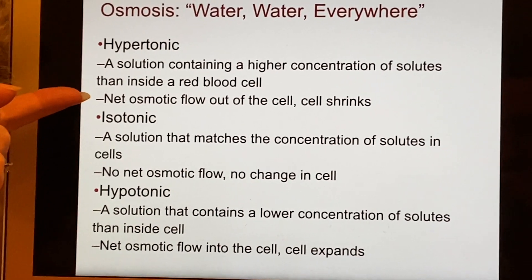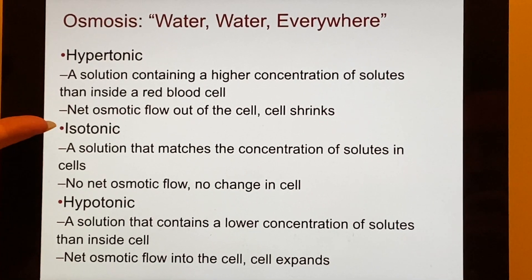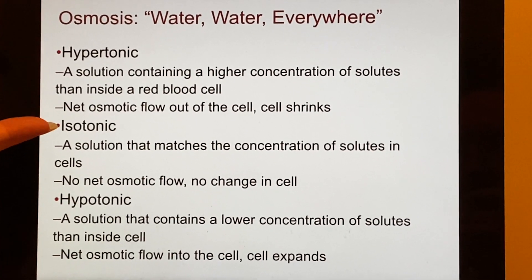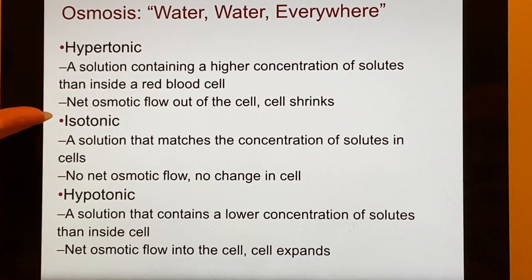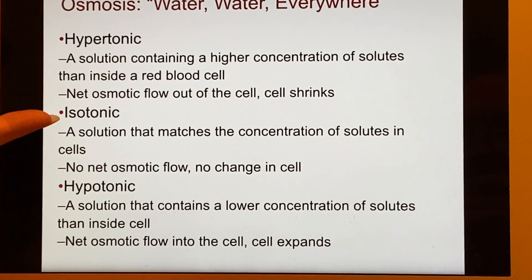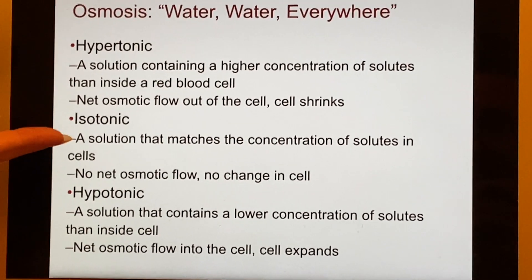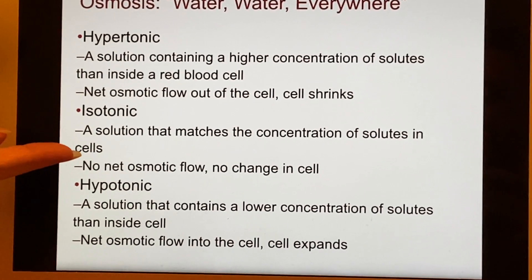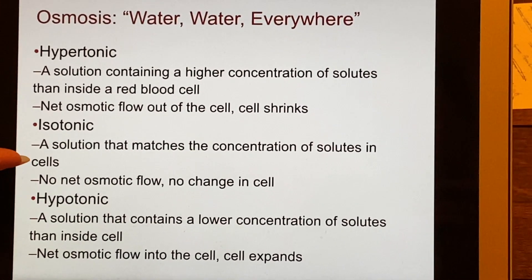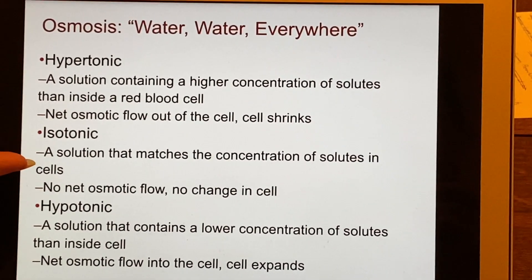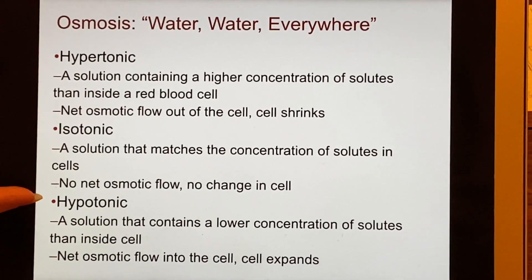An isotonic solution — iso meaning the same — has the same concentration of salts inside and outside the cell, so there is no net flow. If a molecule of water leaves, another comes in. It does not change the cell at all.